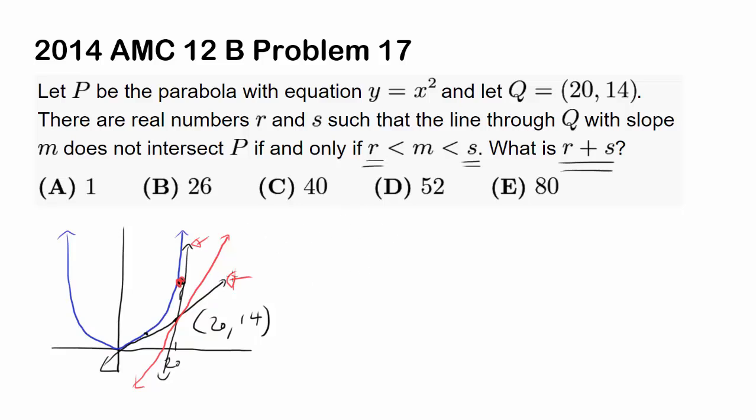I'm going to use calculus to do it, but you don't have to use calculus. You can set the equation up using point-slope form or slope-intercept form, and use the fact that discriminant has to be less than zero for there to be no real solution between the line and the parabola. But in our case, I'm just going to use calculus.